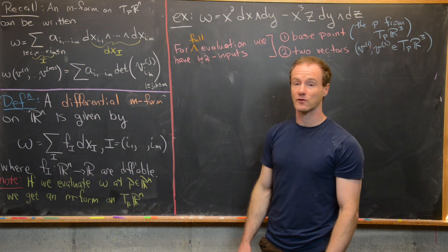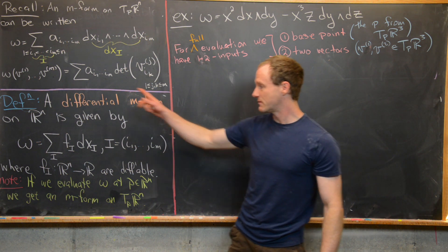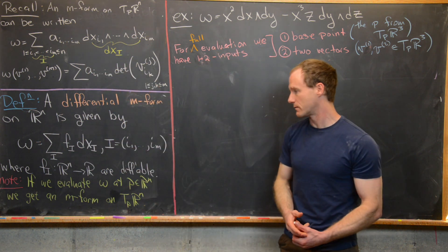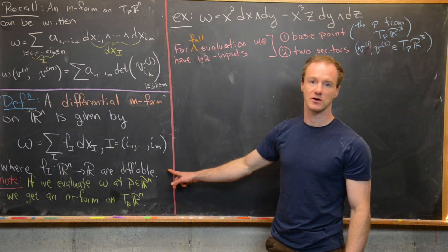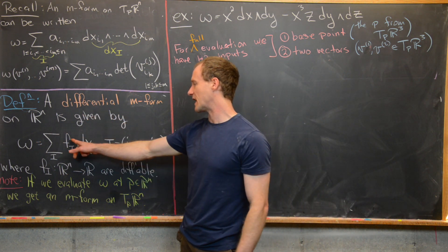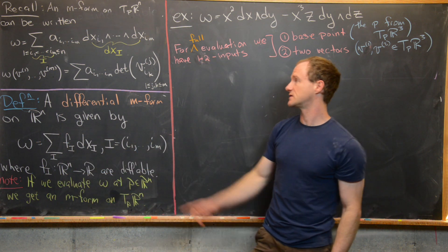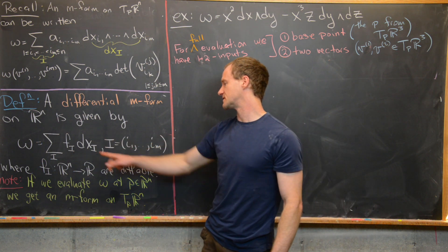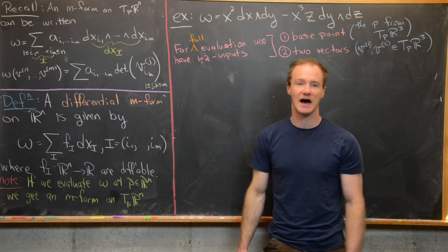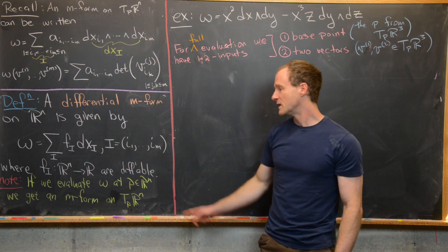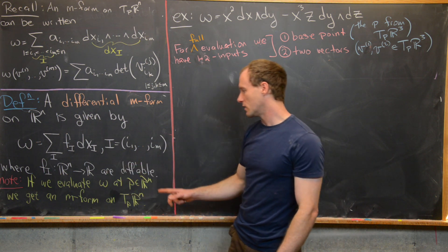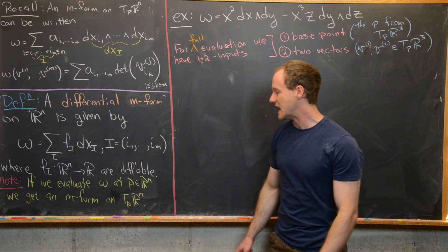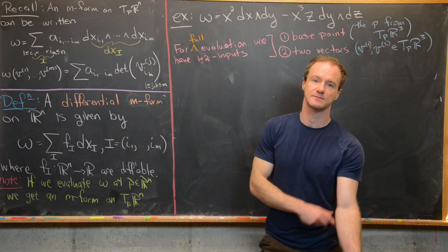Moving on, a differential M-form on R^n is given by a similar combination, but now our coefficients, instead of just being real numbers, are differentiable functions. We have f sub the multi-index I (i.e., i_1 up to i_M) times dx sub that multi-index. If we evaluate omega at a point P in R^n, we get an M-form on that tangent space.